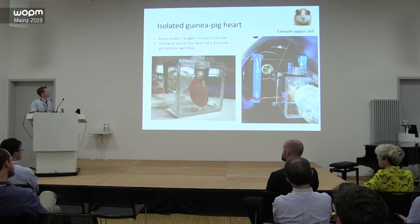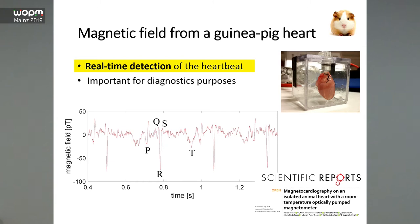This is the main result, showing in real time the signal from our magnetometer in magnetic field units. We see large spikes at roughly three per second, corresponding to the heart rate of this guinea pig heart, and other features — the P wave and T wave — which are important for diagnostic purposes. Our paper from last year was done together with medical researchers and included experiments examining QT time intervals.